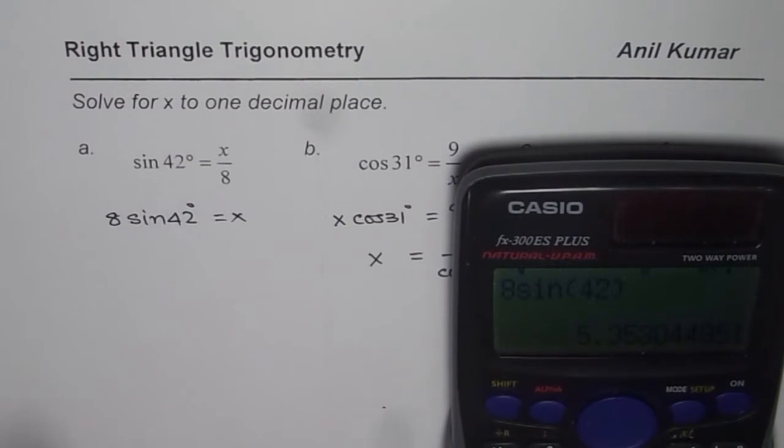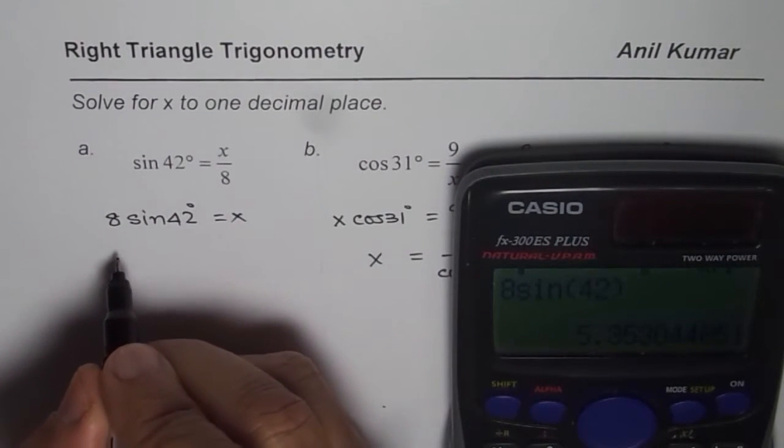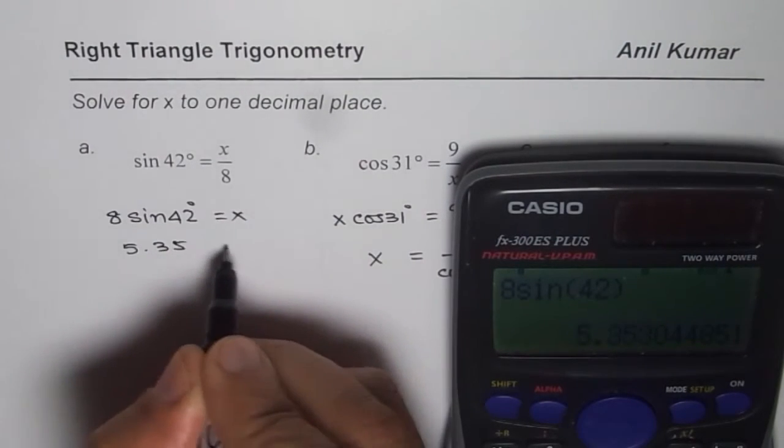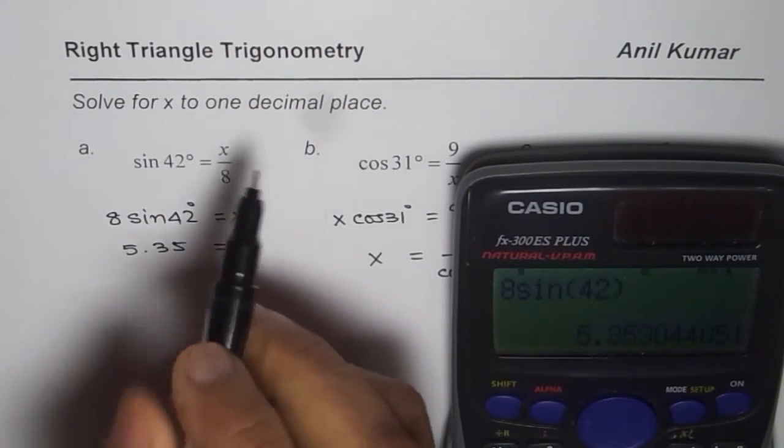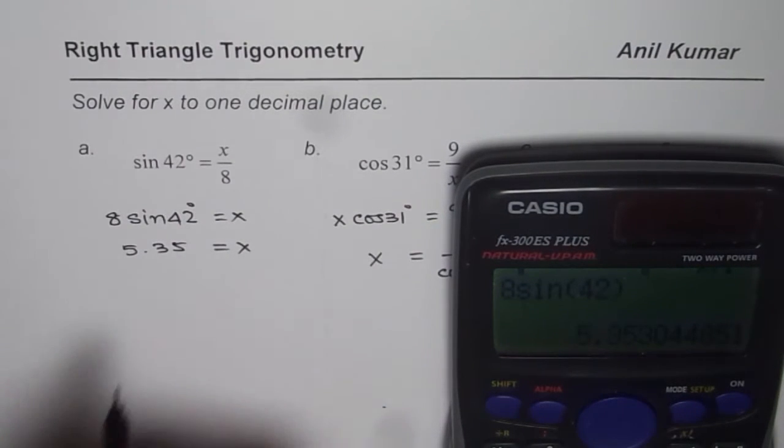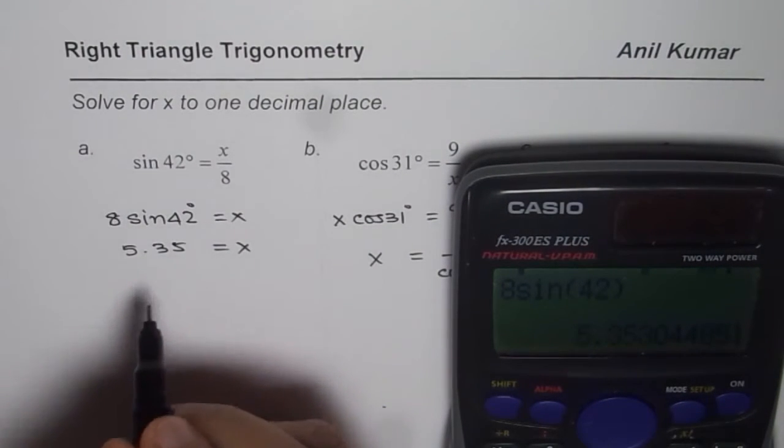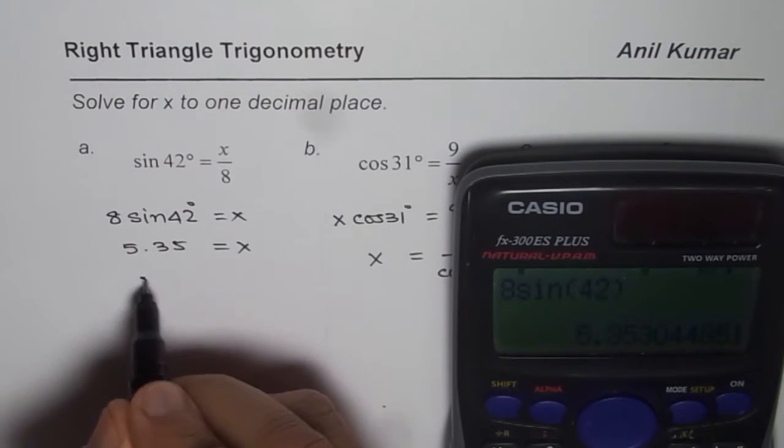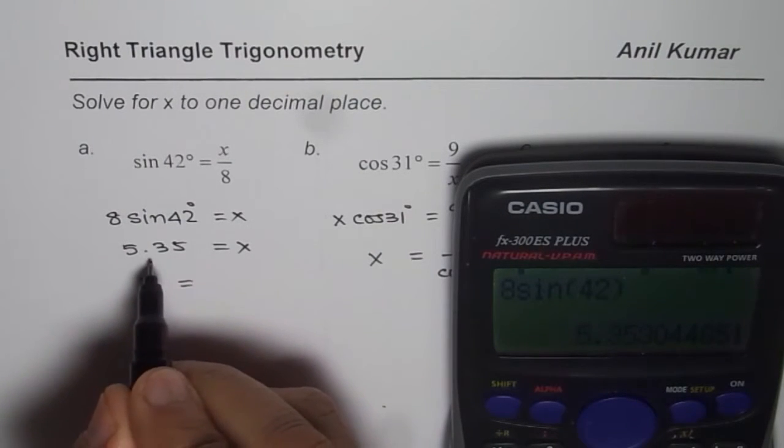We get answer as 5.35. So we have 5.35 equals to x. We have to round to one decimal place. Therefore, I wrote it to two decimal places first. Rounding to one decimal place gives me x as equal to 5.4.